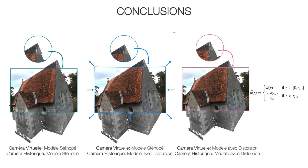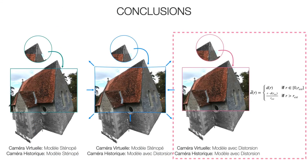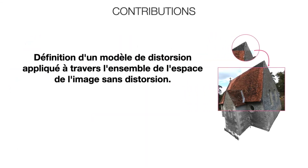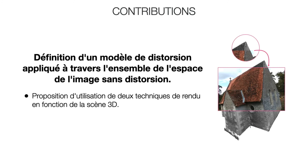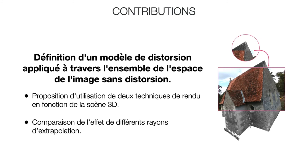In summary, we propose a method that enables the camera used in the 3D environment to inherit and extend the distortion model from the camera sensor that was used to take the historical photograph. Therefore, this method provides a formal procedure for achieving a 3D visualization of historical images that present geometric distortions on scenes composed of triangular meshes or point clouds. Our main contribution is the definition of the extended distortion model for the view camera. The proposal of two different rendering techniques and the change of extrapolation radius are side contributions.